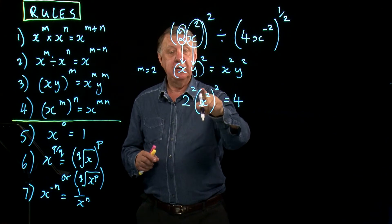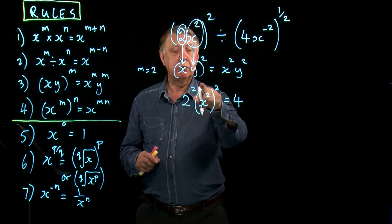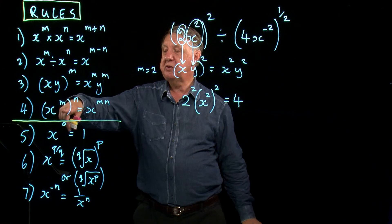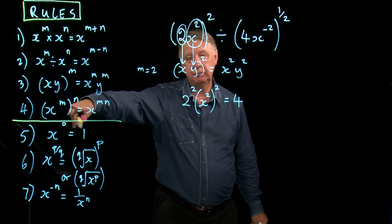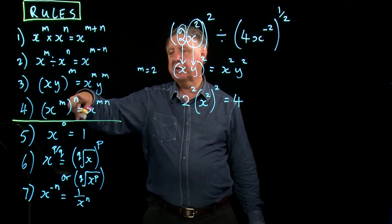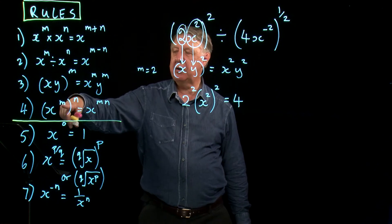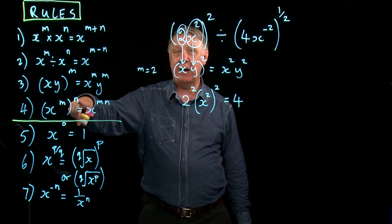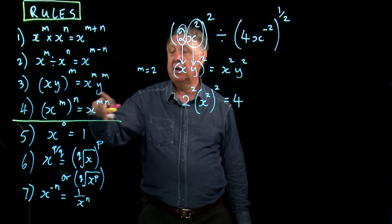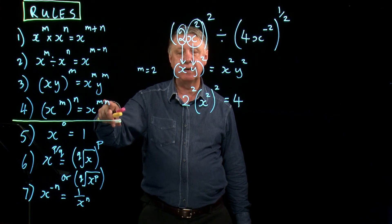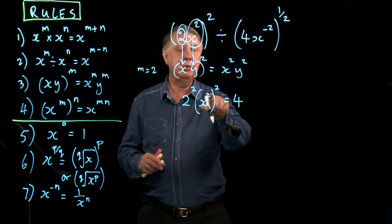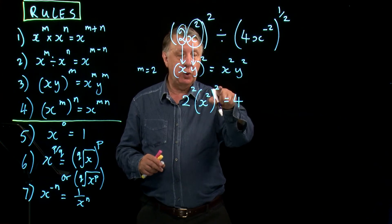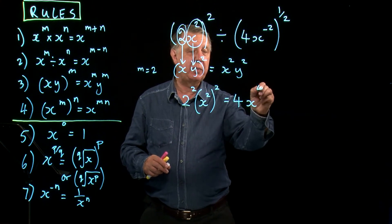Now look what we've got. Because I've now got a power raised to a power, which is rule 4. And rule 4 says if I have a power inside a bracket and a power outside a bracket in this situation, I multiply those powers together. So (x²)² is x to the power 4.